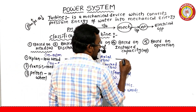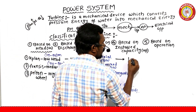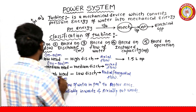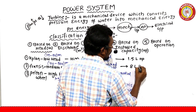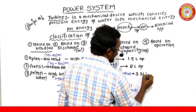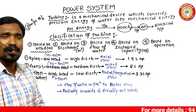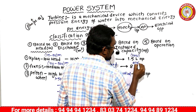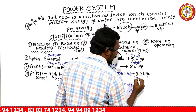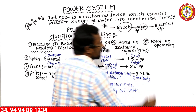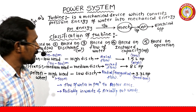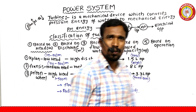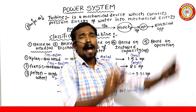Based on installed capacity: the Kaplan Turbine has an installed capacity of 1.5 lakhs HP, the Francis Turbine also has 1.5 lakhs HP (highest installed capacity), and the Pelton Wheel has 3.3 lakhs HP medium installed capacity. The Francis Turbine has the highest installed capacity.